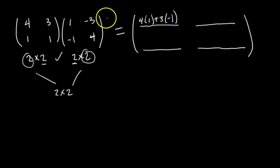This element is the first row, first column. So we dot the first row and the first column. So it looks like this: first row, first column, so 4 times 1 and then plus 3 times negative 1. That's called a dot product where you multiply the corresponding elements together and you add them all up.